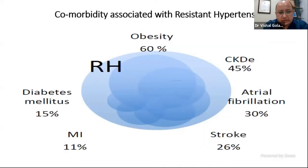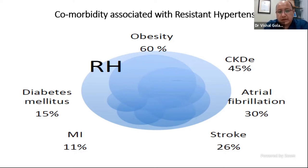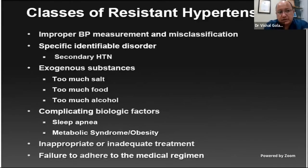Resistant hypertension when seen is usually associated with a few comorbidities — most commonly obesity, chronic kidney disease, underlying metabolic disorders like diabetes, and cardiovascular disorders such as cardiac problems, strokes, and atrial fibrillation. These are the associated comorbidities with resistant hypertension. The causes of resistant hypertension are strongly typed — first of all, when dealing with resistant hypertension, we should be clear we are not dealing with pseudo-resistant hypertension.